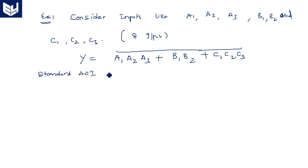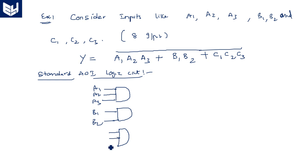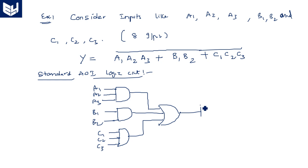Now let us consider the standard AOI logic circuit in terms of logic gates. We need one AND gate with three inputs A1, A2, A3; a second AND gate with inputs B1, B2; and a third AND gate with inputs C1, C2, C3. These three AND gate outputs are connected to an OR gate, and after that an inverter. This is the standard AOI gate-level function.